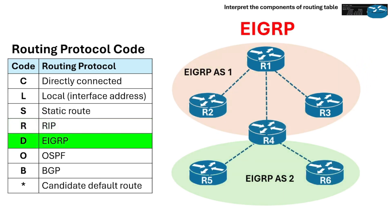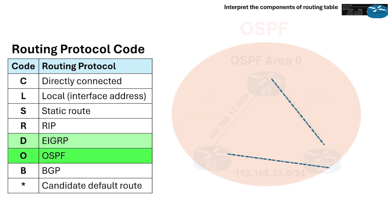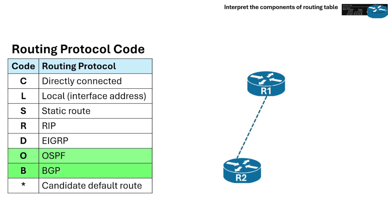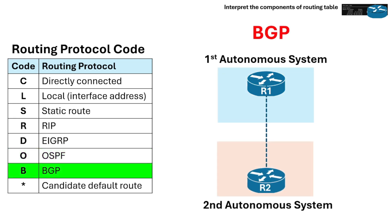D is for EIGRP, which is learned via Enhanced Interior Gateway Routing Protocol. O means OSPF, which is learned via Open Shortest Path First. B is for BGP, which is learned via Border Gateway Protocol.